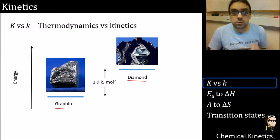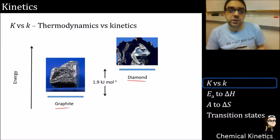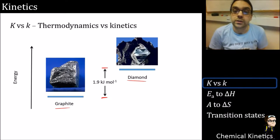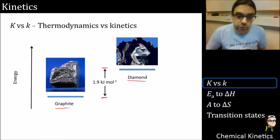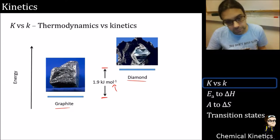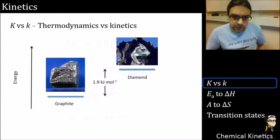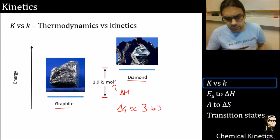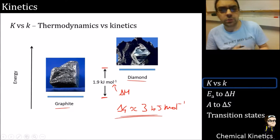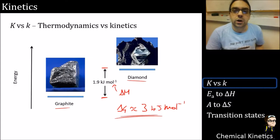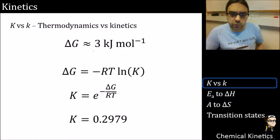You should be aware of the difference between diamond and graphite. Diamond is actually a higher energy structure than graphite by a considerable amount - 1.9 kilojoules per mole is the delta H value between them, and the delta G value is somewhere in the region of about 3 kilojoules per mole. Obviously one is going to be more stable than the other.